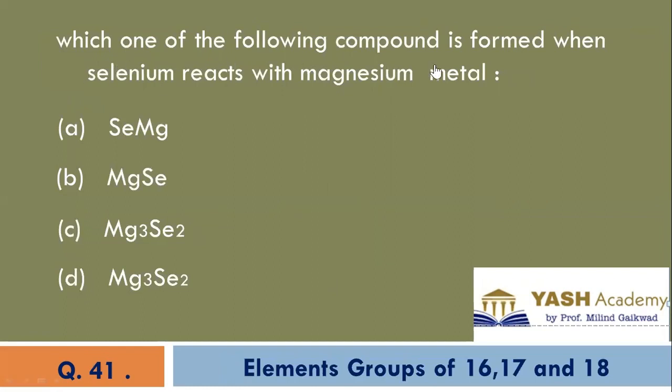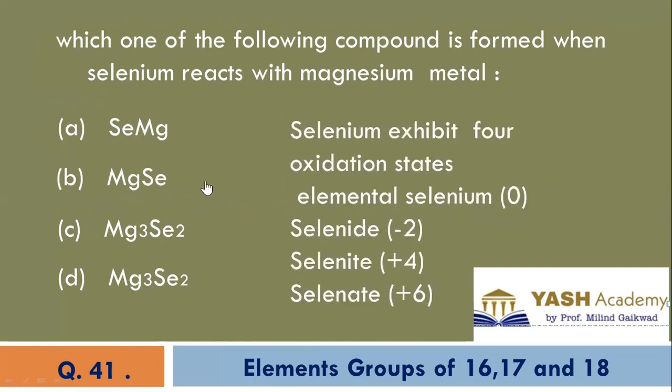Which one of the following compound is formed when selenium reacts with magnesium metal? MgSe, B is the correct option.